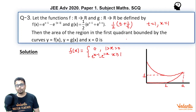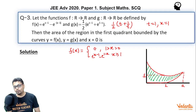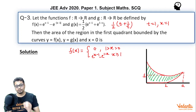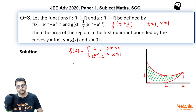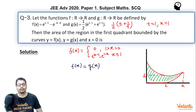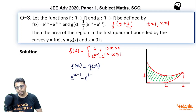Now, what area do we want? We want the area bounded by y = g(x), y = f(x), and x = 0 (the y-axis) in the first quadrant. To find this, we first need to find what 'a' is — the x-coordinate of the point of intersection of y = f(x) and y = g(x). So we set f(x) = g(x). When x > 1 (and clearly a > 1), f(x) = e^(x−1) − e^(1−x).